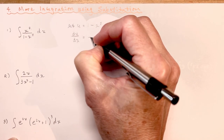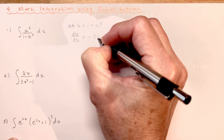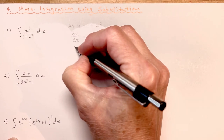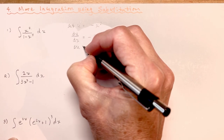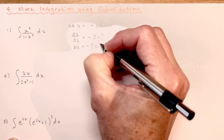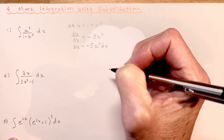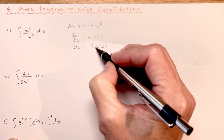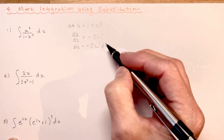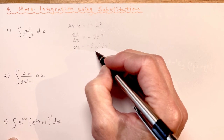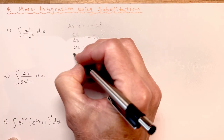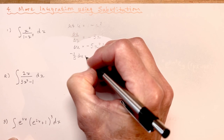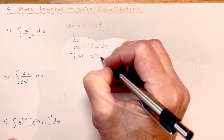So du/dx is going to be minus 5x to the 4th dx. I'm going to put the dx over here because du/dx gives me du. The problem is that I don't have minus 5x to the 4th in the top — I only have x to the 4th. So that means I need to divide both sides by minus 5, giving me minus 1/5 times x to the 4th dx.